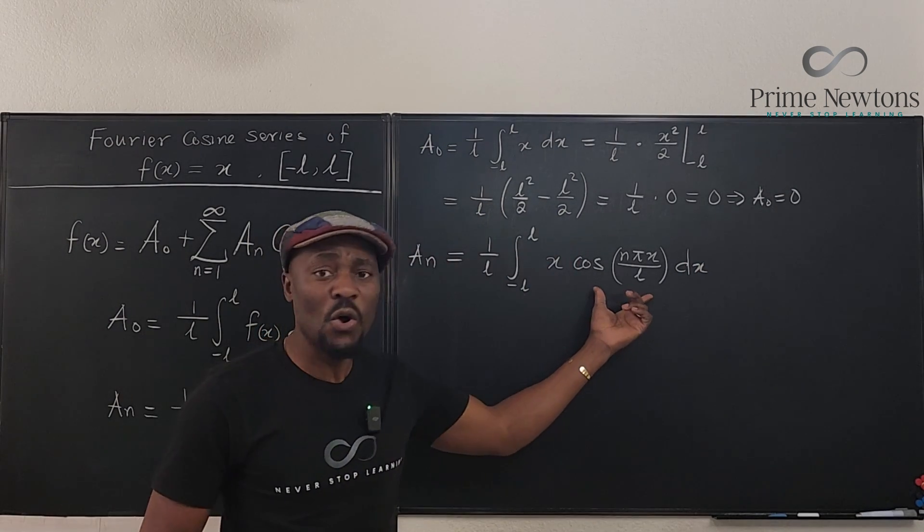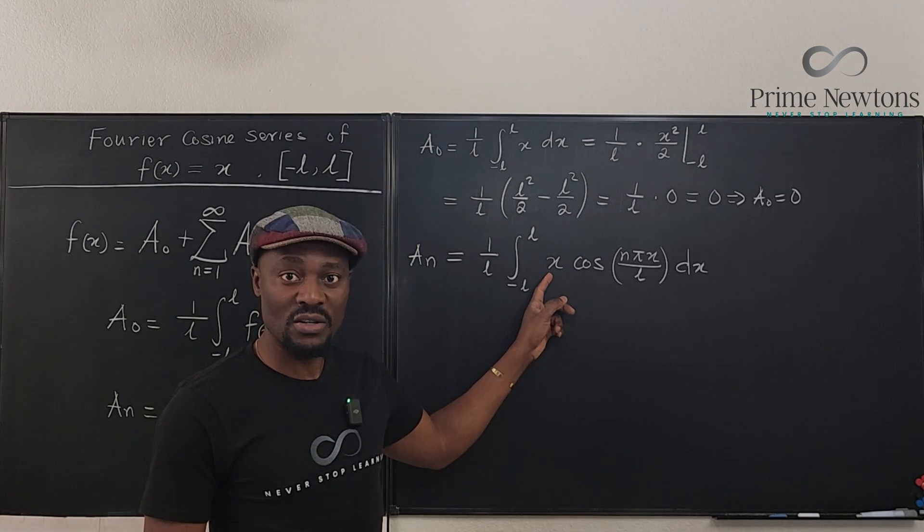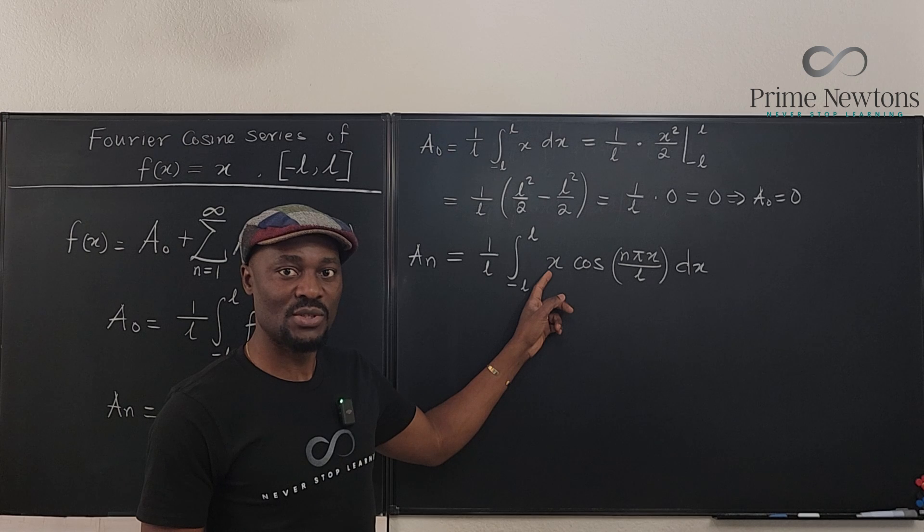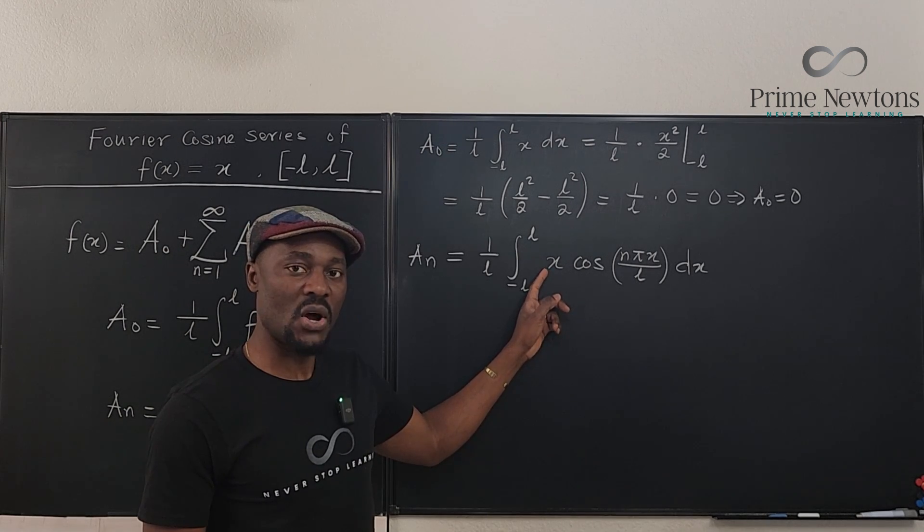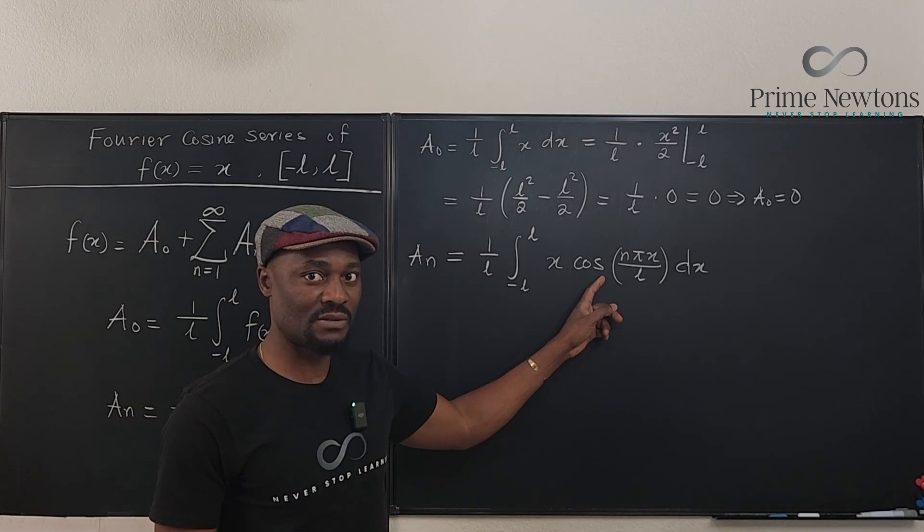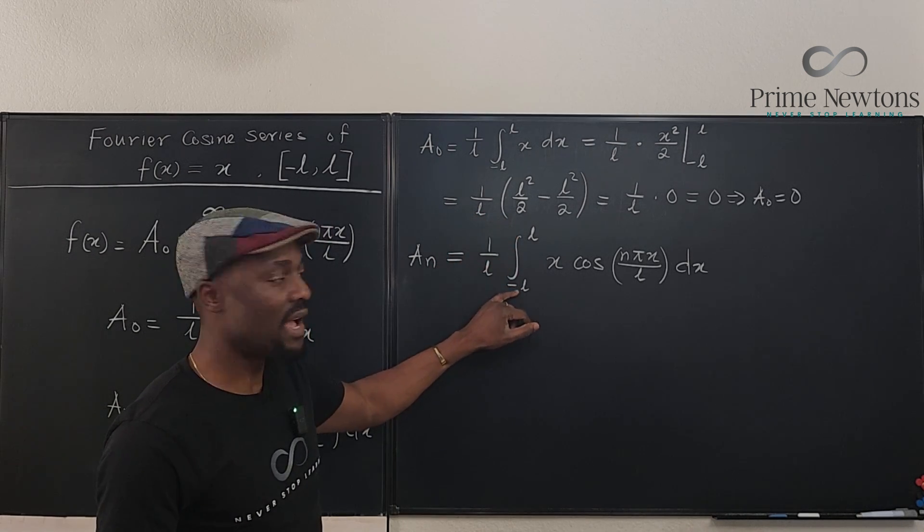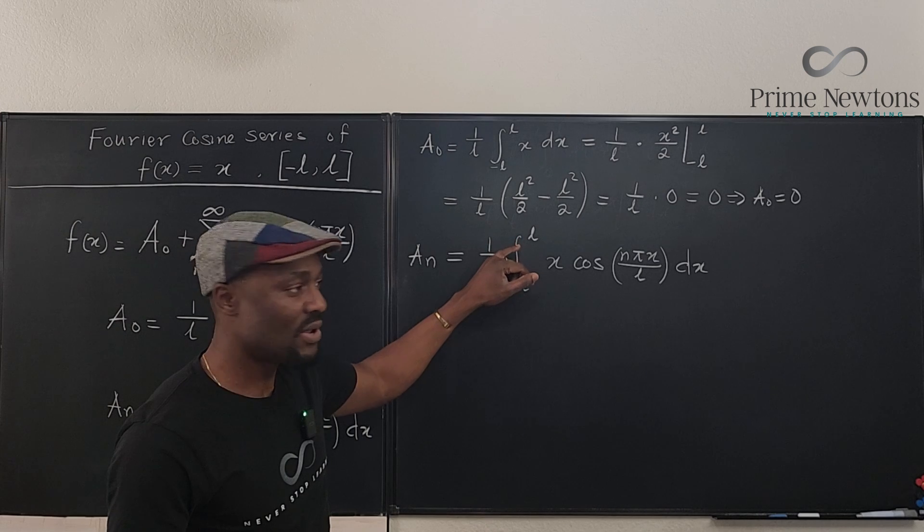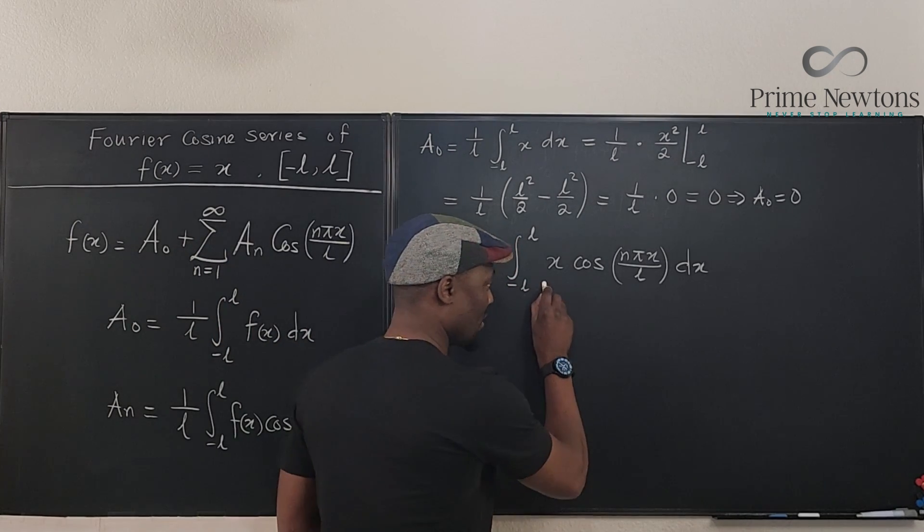Remember the cosine is always an even function and x is an odd function. I don't want to waste time on this one. x is an odd function. So when you multiply an odd function by an even function, what do you get? You get an odd function. Now look at the boundaries of integration. It's from negative L to L. It's a symmetric boundary from negative to positive. Remember what we've said about odd functions. Whenever you have a case like this. So this is an odd function.